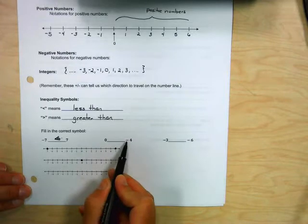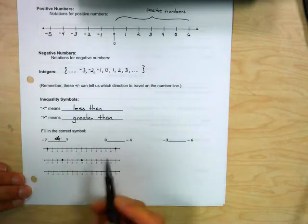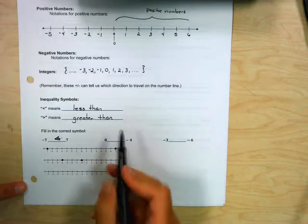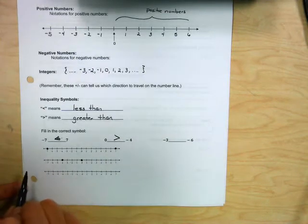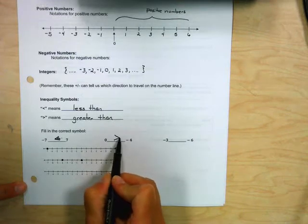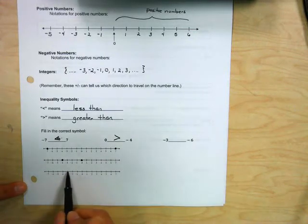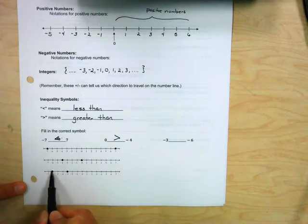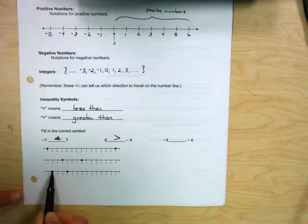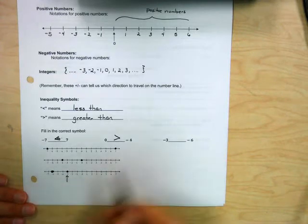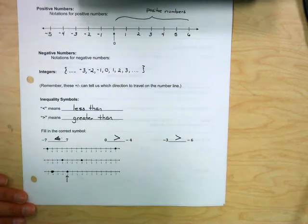Now let's look at zero and negative four. Zero is to the right of negative four, so zero is the bigger number — the mouth eats zero, or the arrow points to the smaller number. For the last one, negative three versus negative six: negative three is to the right of negative six, so negative three is bigger than negative six, and the sign goes accordingly.